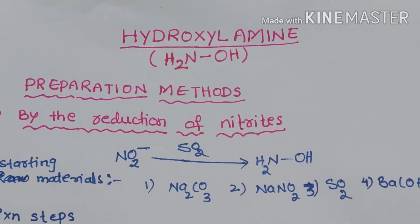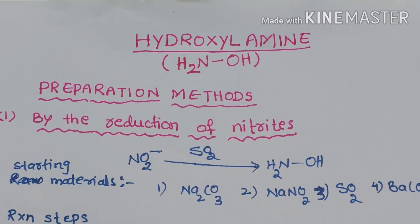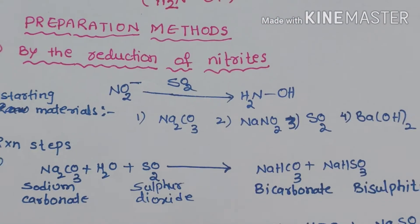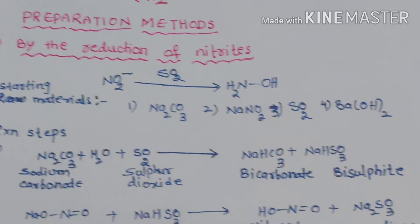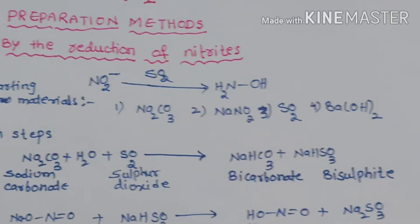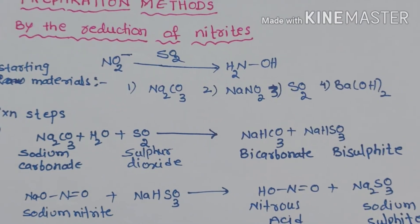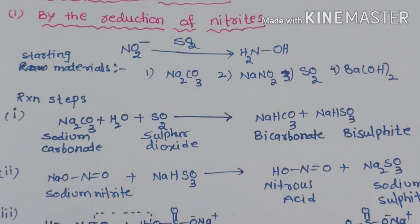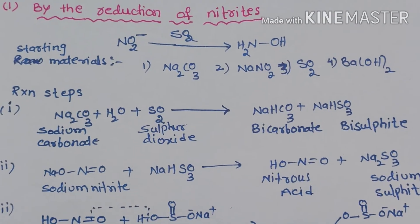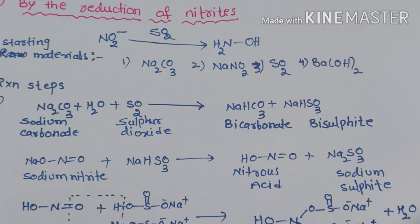First we go for the preparation methods of hydroxylamine. The first method is the reduction of nitrites. In this method, sodium carbonate (Na₂CO₃), sodium nitrite (NaNO₂), sulfur dioxide gas (SO₂), and barium hydroxide Ba(OH)₂ are used as starting materials. There are five steps that occur in this reaction. In the first step, sodium carbonate reacts with sulfur dioxide gas in the presence of water.